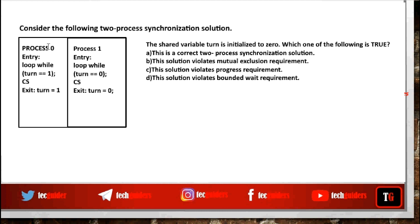This algorithm is similar to Algorithm 1 for two process synchronization. A shared variable turn is used to synchronize the two processes. As long as turn equals 1, p0 will never enter the critical section — it waits in the while loop. When turn equals 0, p0 can enter the critical section. While exiting,